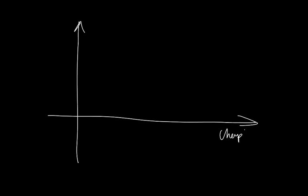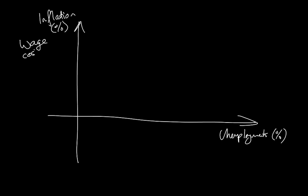We have looked at the short-run Phillips curve in lessons, so let me just go through a little bit what we saw there to remind ourselves. We were looking at a diagram like this where you have unemployment on the horizontal axis and inflation on the vertical axis. Originally, when this was first done, it was wage costs on the vertical axis, but that's been adapted now to inflation more generally.